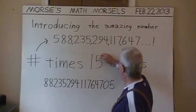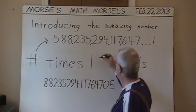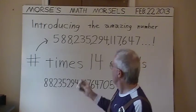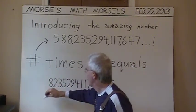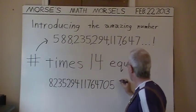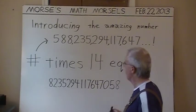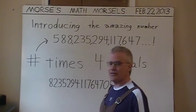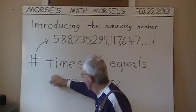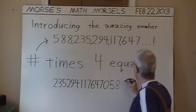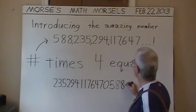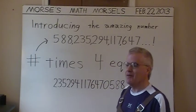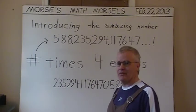The next multiplication is by 14. Rub the 5 out and put a 4 in its place. This number times 14 is the number at the top times 14. Rub out the 8 and move it all the way over to the right where it reappears. This number times this equals this result — what I'm doing is cyclically permuting the digits.